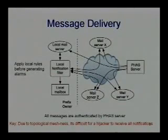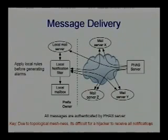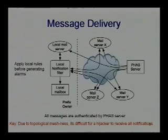We look up the prefix in our table and see the registered email addresses. Message delivery is critical because if your prefix gets hijacked, there is no guarantee that I can actually reach you via email. So what we do is increase the reliability of delivery. We recommend that as a prefix owner, you should have two emails from different prefix blocks. Also, you can register using public emails like Hotmail, Yahoo Mail, or Gmail. We have a local notification filter which combines all these and sends you just one instance of every notification, so you won't receive duplicates. You can also apply filtering rules here to filter out some alarms.